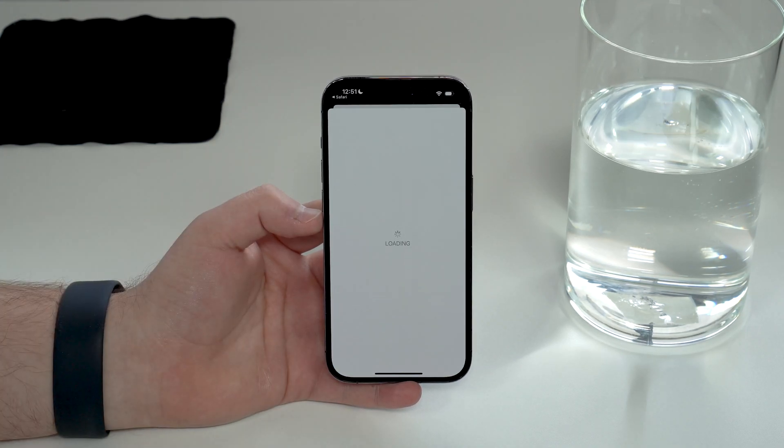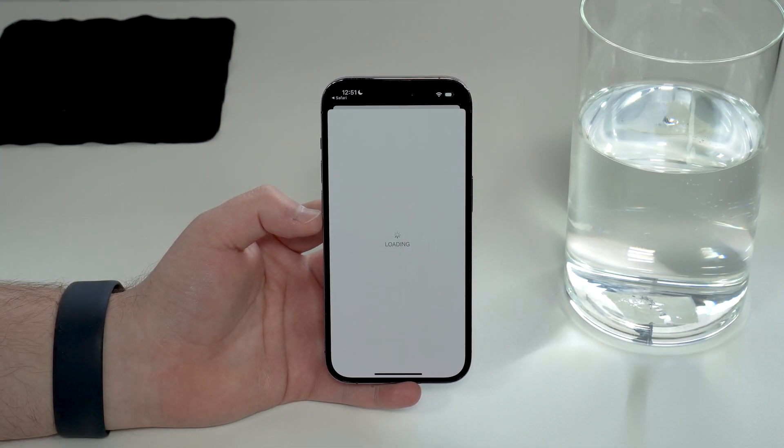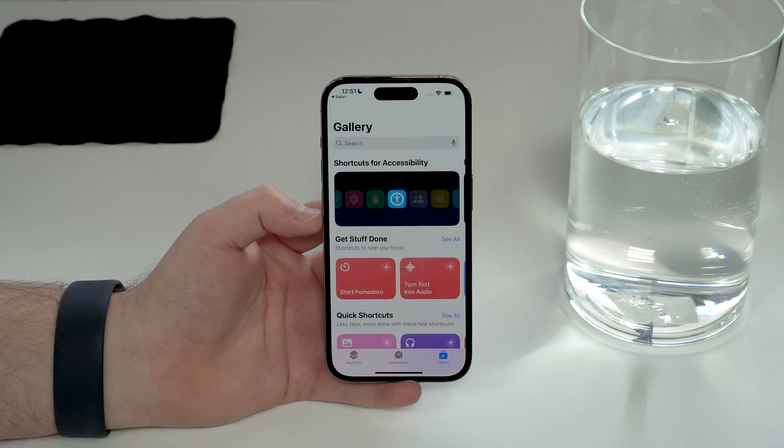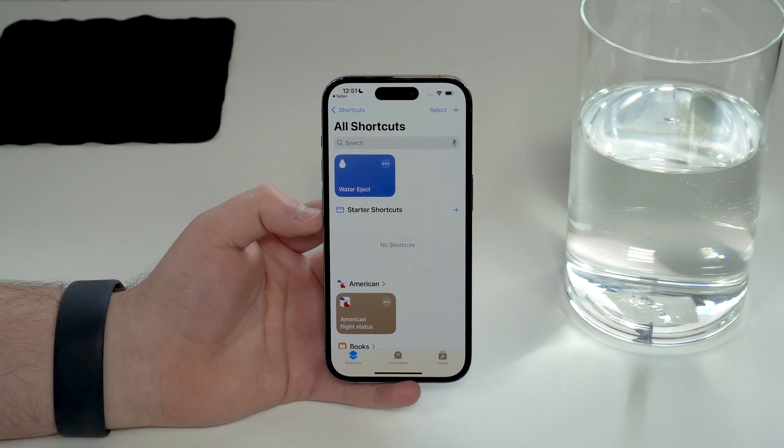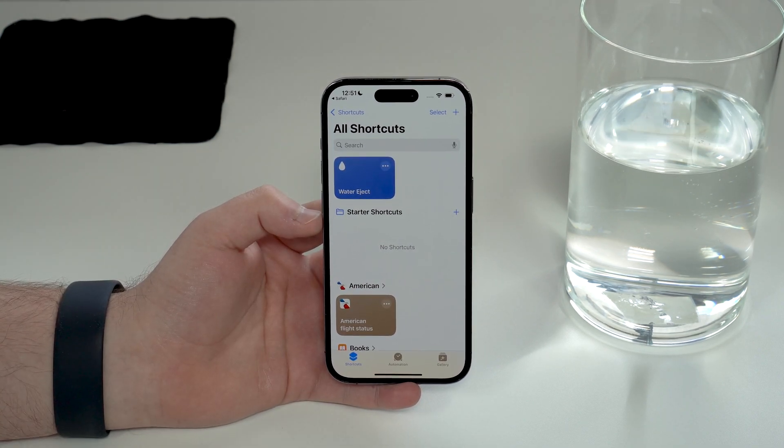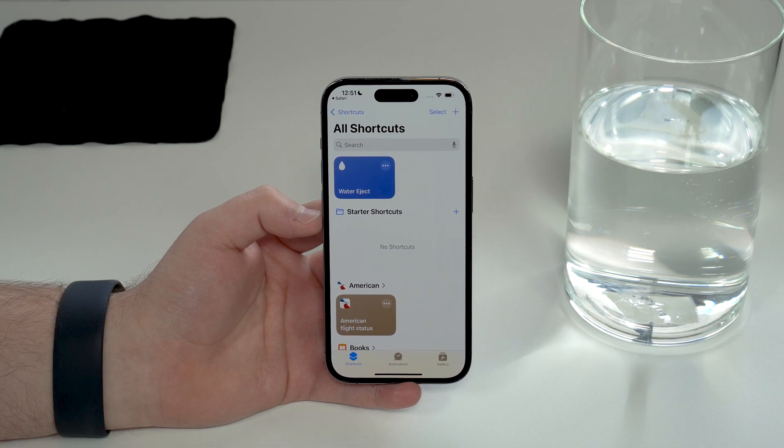Make sure you have it and then you can go ahead and get shortcut, get Water Eject. As you can see, it'll already open up the shortcuts app automatically, it's gonna load, and then just go ahead and add a shortcut. As you can see, it's gonna come right here. Super super easy.